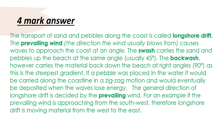Please green pen your answer using the model answer. The transport of sand and pebbles on the coast is called longshore drift. The prevailing wind — make sure you have put prevailing wind, not just wind — is the direction the wind usually blows from, and causes waves to approach at an angle. The swash carries the sand and pebbles up the beach at the same angle, usually 45 degrees. The backwash, however, carries the material back down the beach at right angles, 90 degrees, as this is the steepest gradient. If a pebble was placed in the water, it would be carried along the coastline in a zigzag motion, and would eventually be deposited when the waves lose energy. The general direction of longshore drift is decided by the prevailing wind. For example, if the prevailing wind is approaching from the southwest, longshore drift is moving material from west to east.